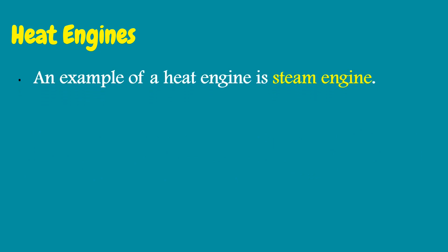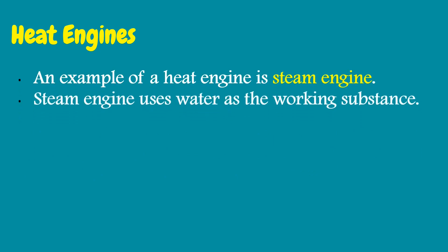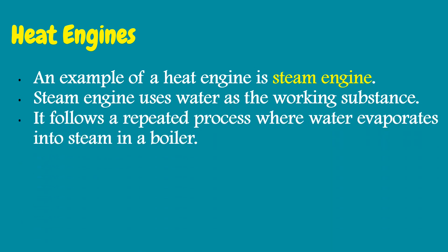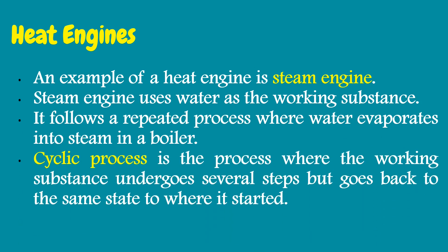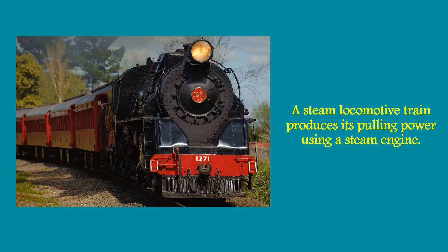An example of a heat engine is a steam engine. A steam engine uses water as the working substance. It follows a repeated process where water evaporates into steam in a boiler. The cyclic process is the process where the working substance undergoes several steps but returns to the same state where it started. A steam locomotive train produces its power using a steam engine.